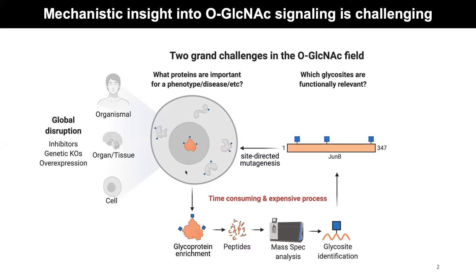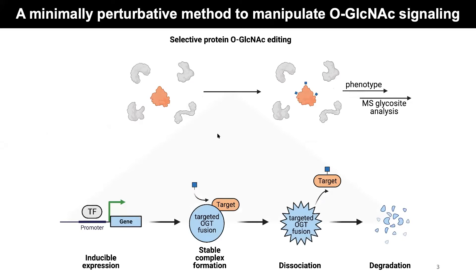We were thinking: what if we could bypass some of these steps and look directly at proteins, modify them directly, and see if we could get a phenotype — observing similar effects to what you might see on a global level? You might imagine selectively modifying a certain protein, either by adding or removing the sugars, and then observing a phenotype that you can follow up with mass spec analysis. To do something like this, you would want to develop a tool that is highly specific, controllable, inducible, able to target a protein of interest, edit it, and then dissociate and degrade in the cell to prevent off-target effects.